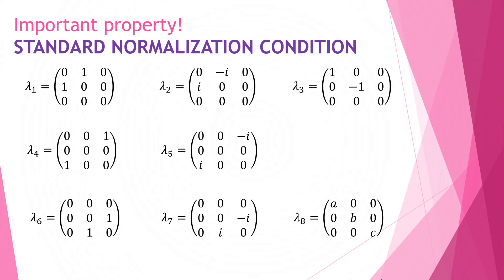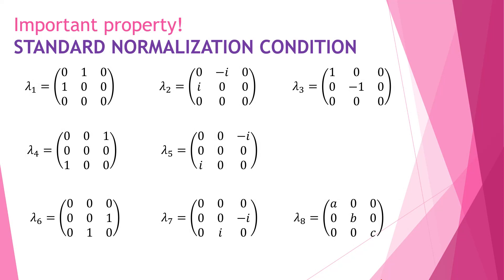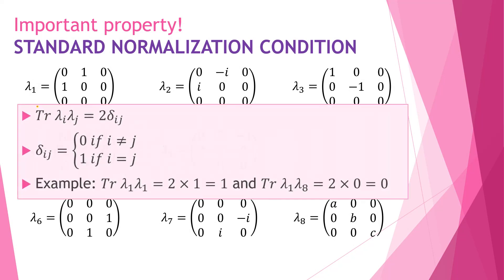There is a very important property called the standard normalization condition related to these groups, defined as: the trace of the product of two matrices equals 2 times delta i j. This is called the Kronecker symbol, and it's defined so that if i is different than j, then delta equals zero, and if i is equal to j, then its value is one. So for example, for the trace of lambda 1 times lambda 1: i equals 1 and j equals 1, so i equals j, meaning delta equals 1 and the trace must be 2 times 1, which is 2.